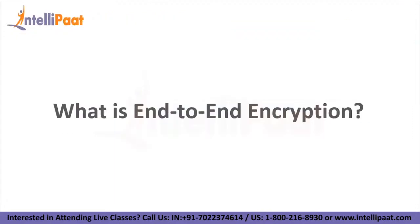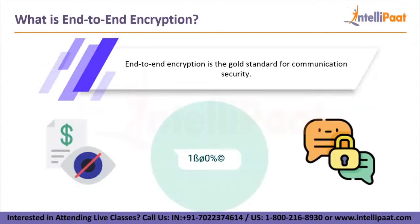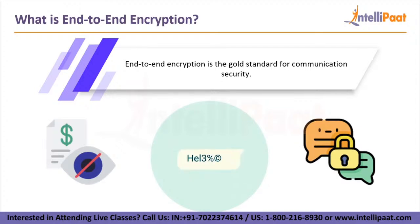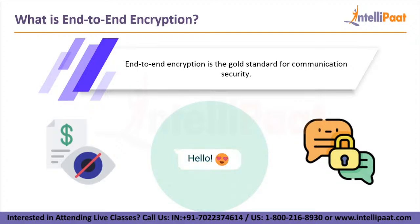What is end-to-end encryption? End-to-end encryption is the gold standard for communication security. Only the sender and the intended recipient — and no one else — has access to the data in an end-to-end encrypted system. The encrypted data on the server is inaccessible to both hackers and undesirable third parties.